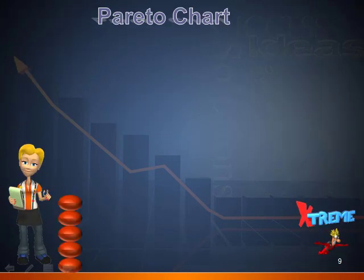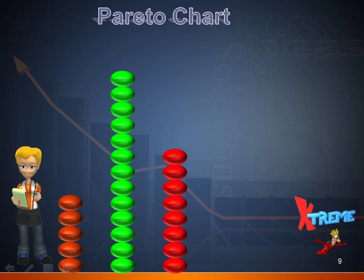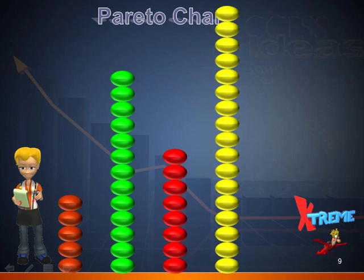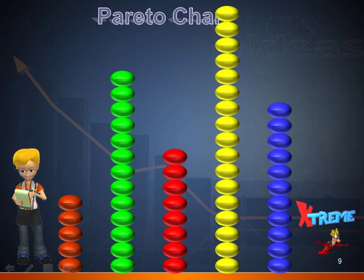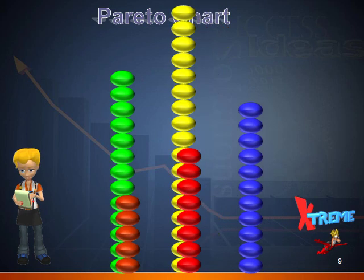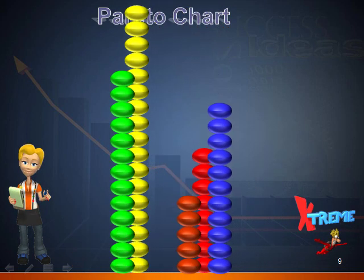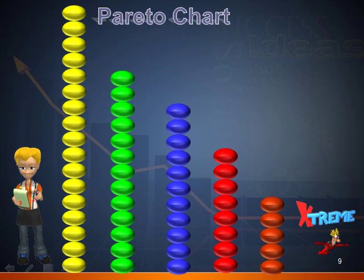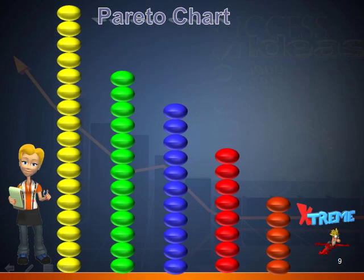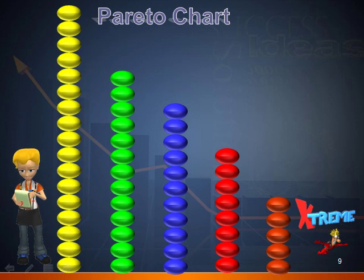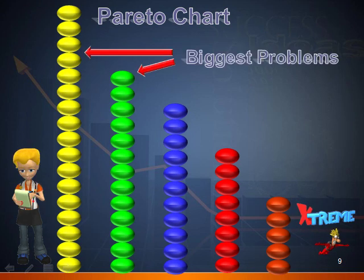Then, using your count of each group, you can get an idea of how each problem stacks up against each other. Then put the largest groups to the left, descending to the right. You now have a basic Pareto Chart. One of the purposes of Pareto Charts is to identify the most significant items, which will show you where to focus your efforts.